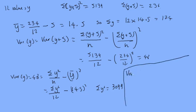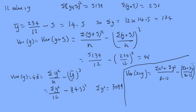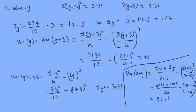Now we can combine the datasets. The variance of x and y together equals (sum of x squared plus sum of y squared) over (8 plus 12), minus (sum of x plus sum of y) over (8 plus 12), all squared. That's (4290 plus 3099) over 20, minus (180 plus 174) over 20, all squared, which works out to be 54.616.